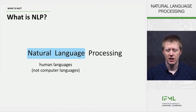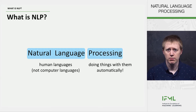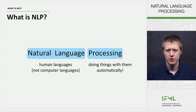I'll start by defining the two pieces of it. The first is that we're talking about natural languages. Natural languages are human languages rather than computer languages — for example, English, Chinese, Spanish, etc. Not Python or Java. And then we are processing these languages, meaning we're trying to do things with them automatically. So we want to build systems that can take things that you write or say and do stuff with them.